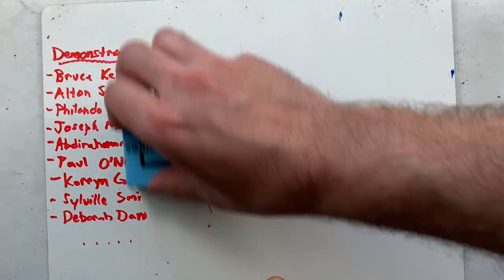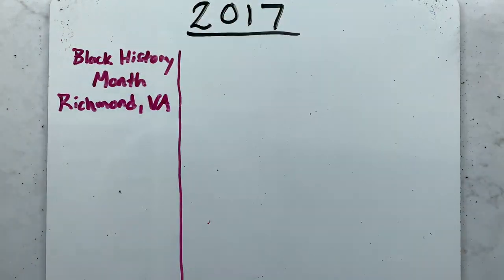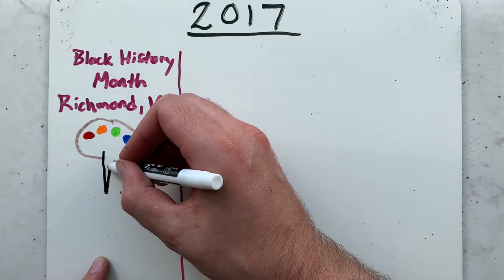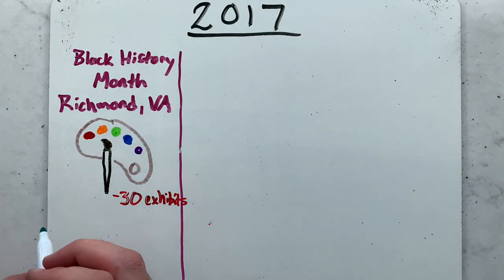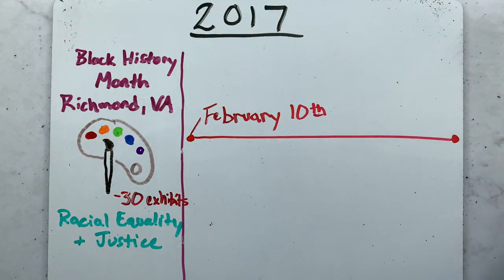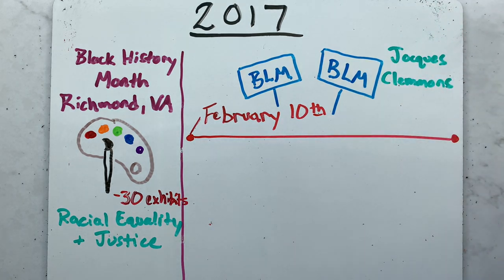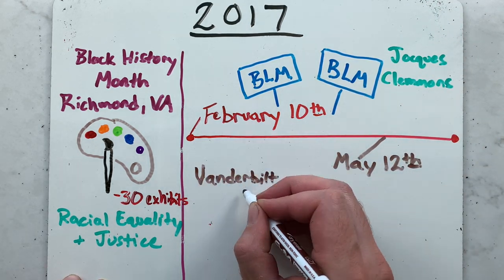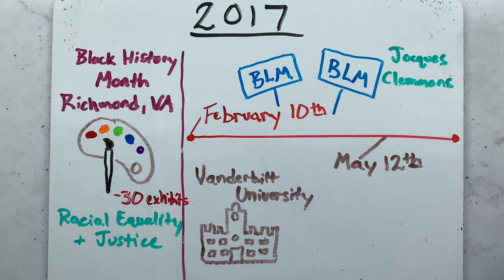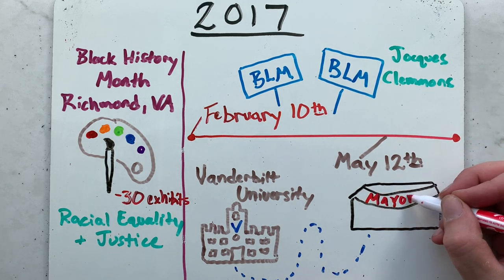In 2017, during Black History Month, a month-long Black Lives Matter art exhibition was organized by three Richmond, Virginia artists at the First Unitarian Universalist Church. The show featured more than 30 diverse multicultural artists on a theme of exploring racial equality and justice. On February 10th, the BLM movement protested the shooting of Jacques Clemons, which occurred in Nashville, Tennessee. On May 12th, 2017, the day after the District Attorney of Davidson County decided not to prosecute the police officer responsible for Jacques' death, the BLM held a demonstration near Vanderbilt University campus, all the way to the residence of the Nashville mayor.